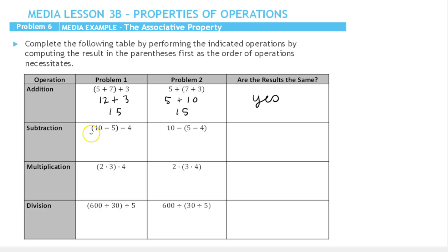Let's move on to subtraction. 10 minus 5 is 5. 5 minus 4 is 1. In this example, we need to do the 5 minus 4 first because it's in parentheses. Well, 5 minus 4 is 1 and 10 minus 1 is 9. So here we had 1, here we had 9. So the results are not the same.